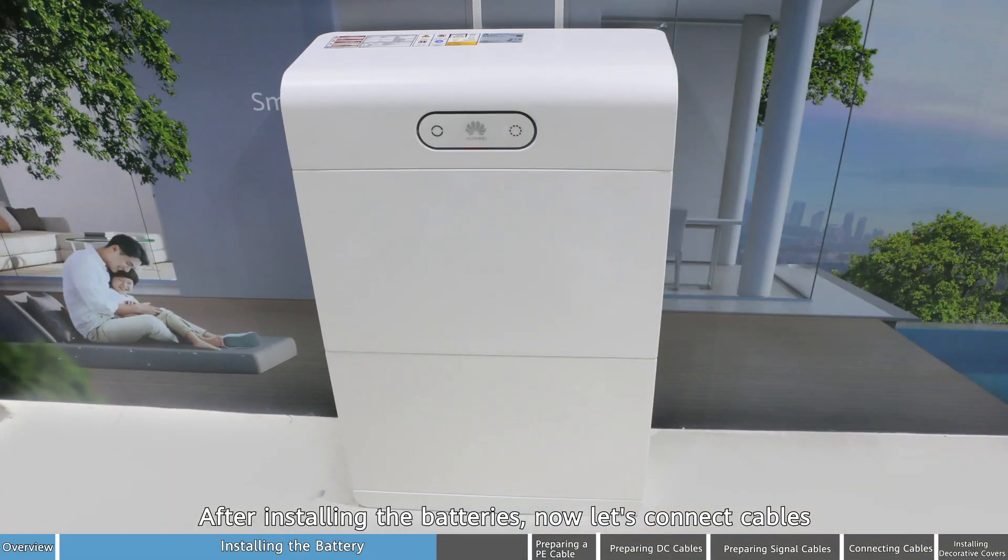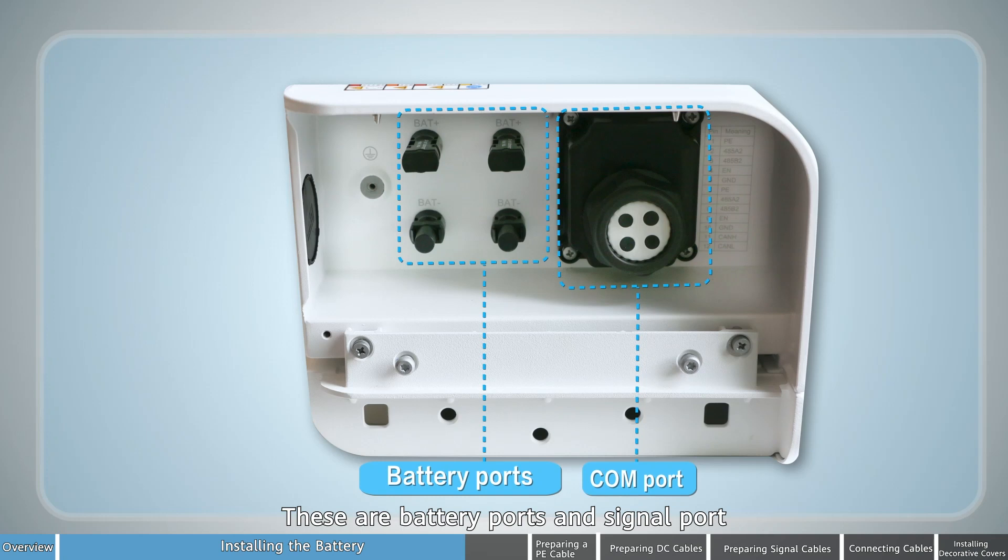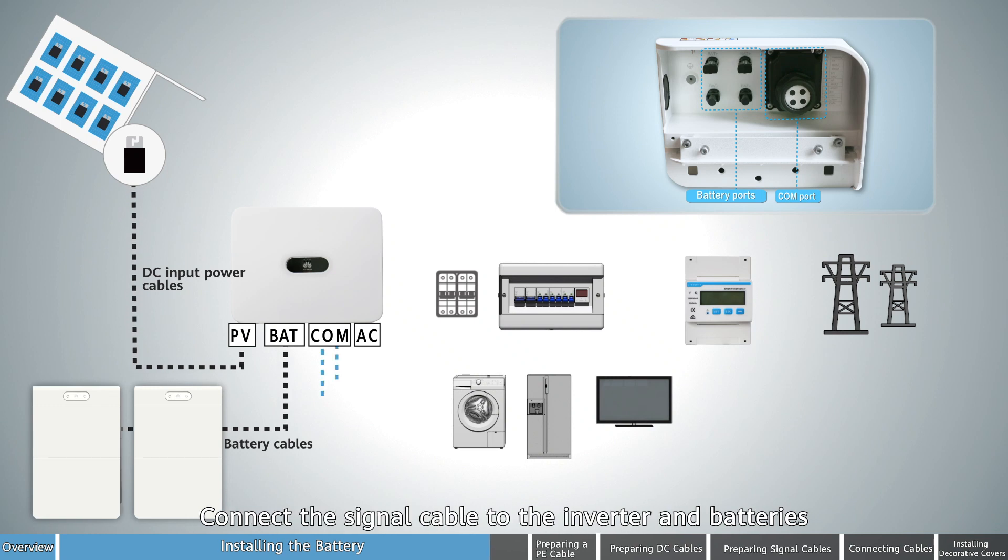After installing the batteries, now let's connect cables. Connect cables for the batteries. These are battery ports and signal port. Connect DC power cables to the inverter and batteries. Connect the signal cable to the inverter and batteries.